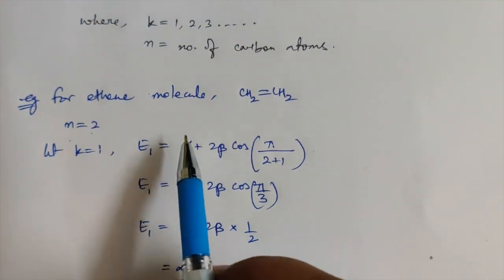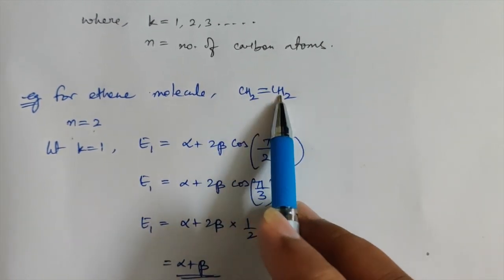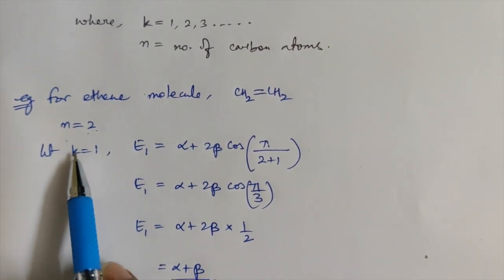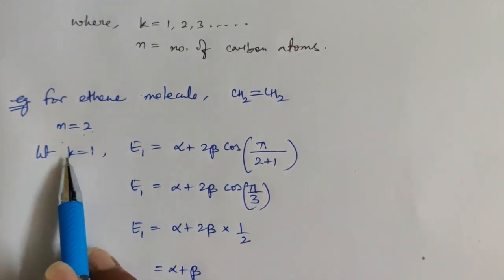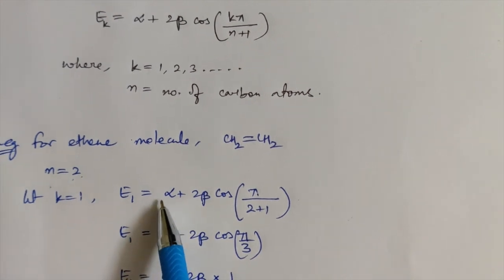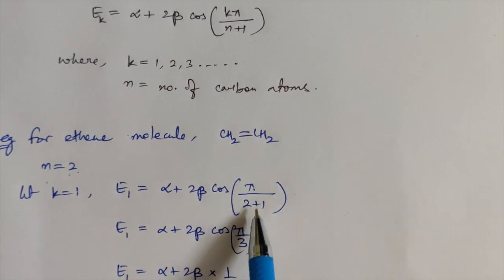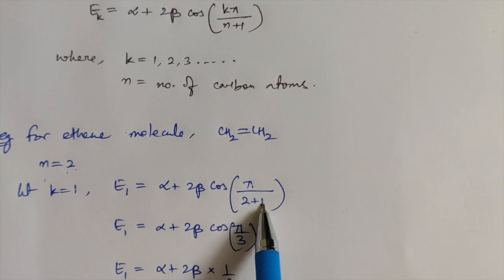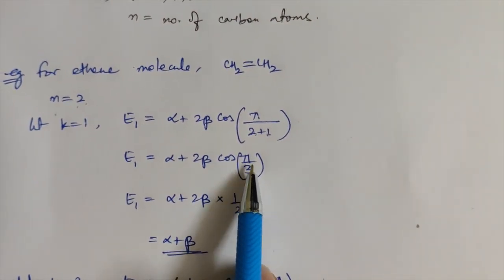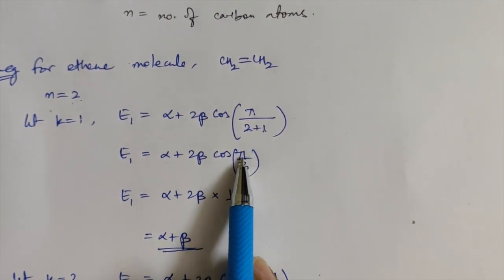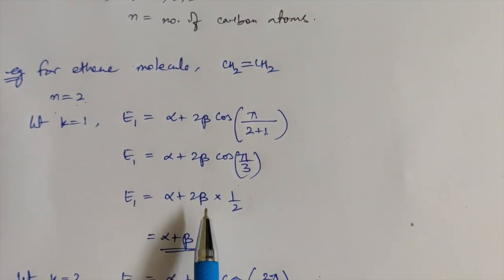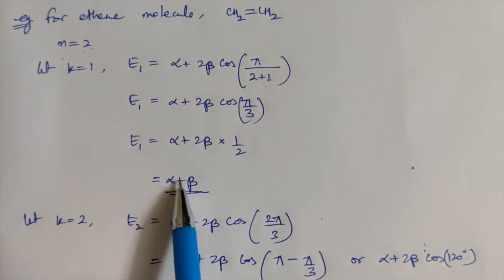Ethene is CH₂=CH₂, so it has two carbon atoms, meaning N = 2. K will start from one and can be one or two. For K = 1: E₁ = α + 2β cos(π/3). Now cos(π/3) = cos 60° = 1/2, so the two and two cancel, giving E₁ = α + β. For K = 2: E₂ = α + 2β cos(2π/3). Cos(2π/3) = cos 120° = −1/2, so the result is E₂ = α − β.